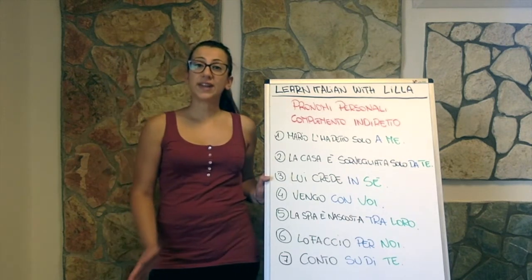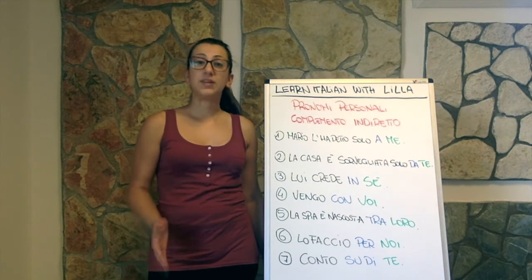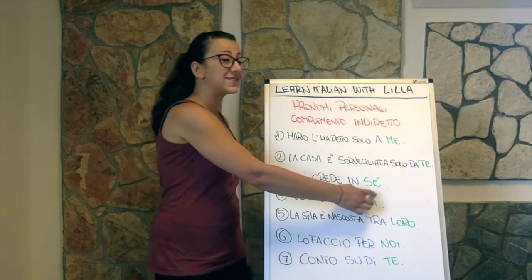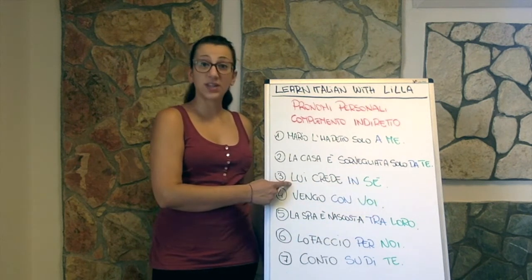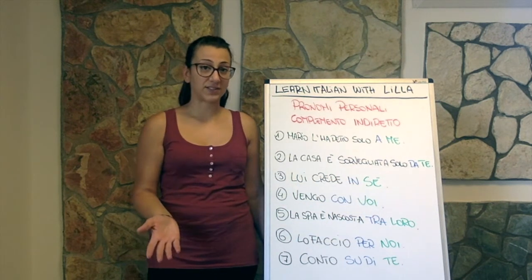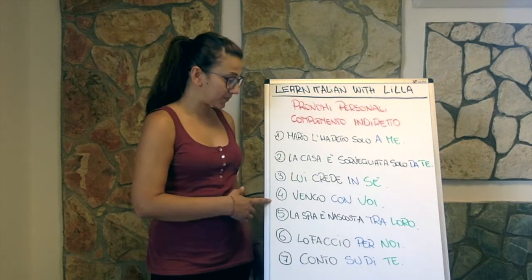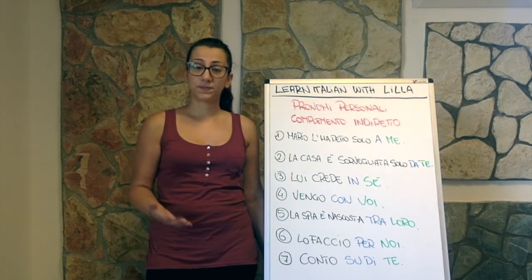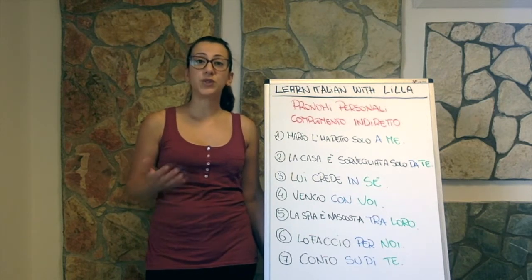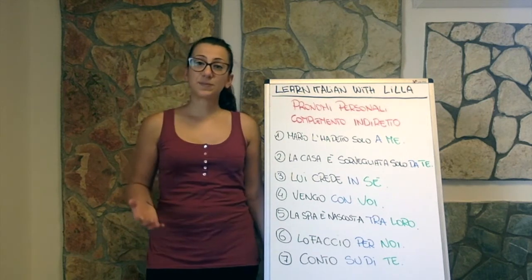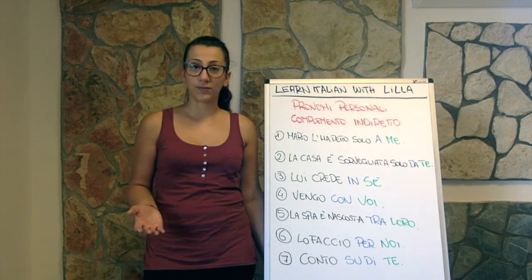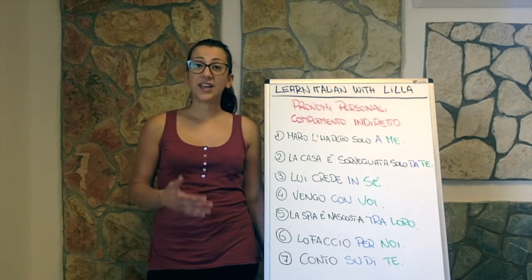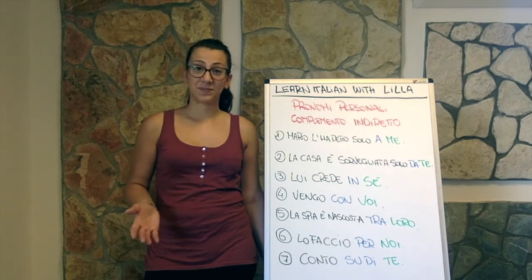Lui crede in sé. — He believes in himself. We use 'se' when the subject is the same, so it's reflexive. Vengo con voi. — I come with you. La spia è nascosta tra loro. — The spy is hidden among them.